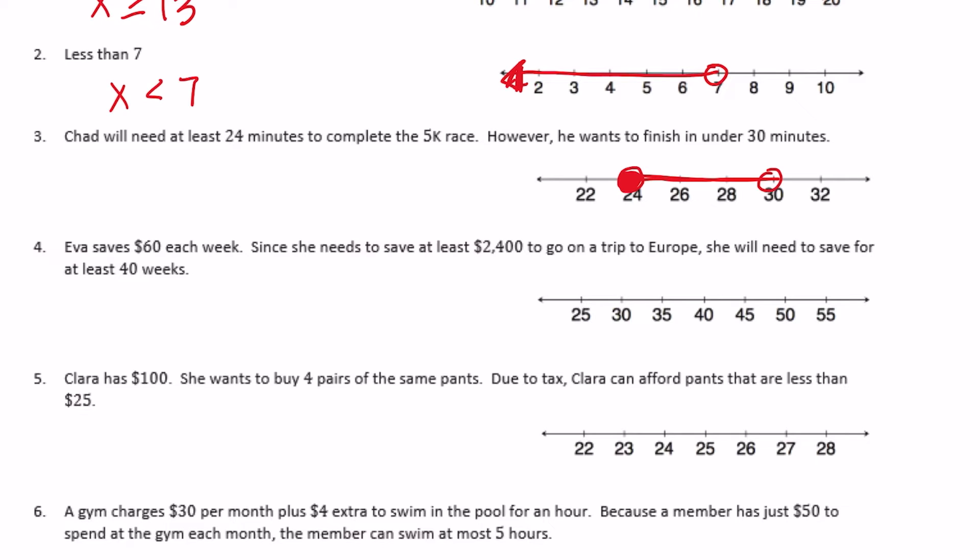So x needs to be less than 30 but it needs to be greater than or equal to 24. So x is greater than or equal to 24. I'm looking at it backwards, so 24 is less than or equal to x is less than 30.